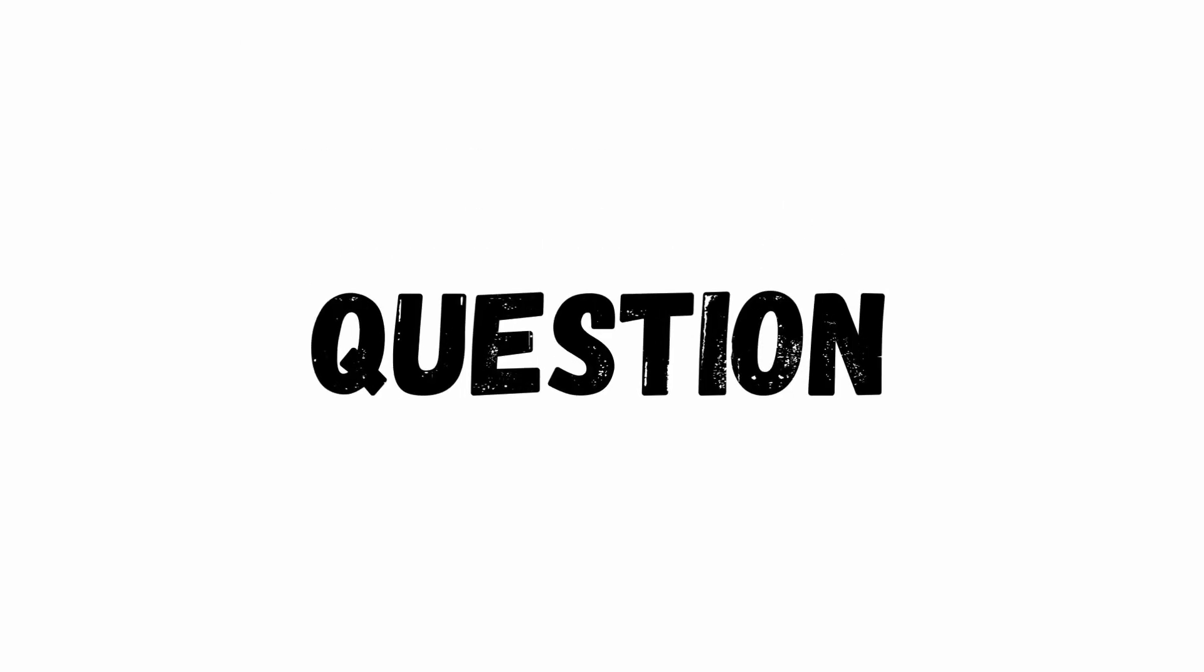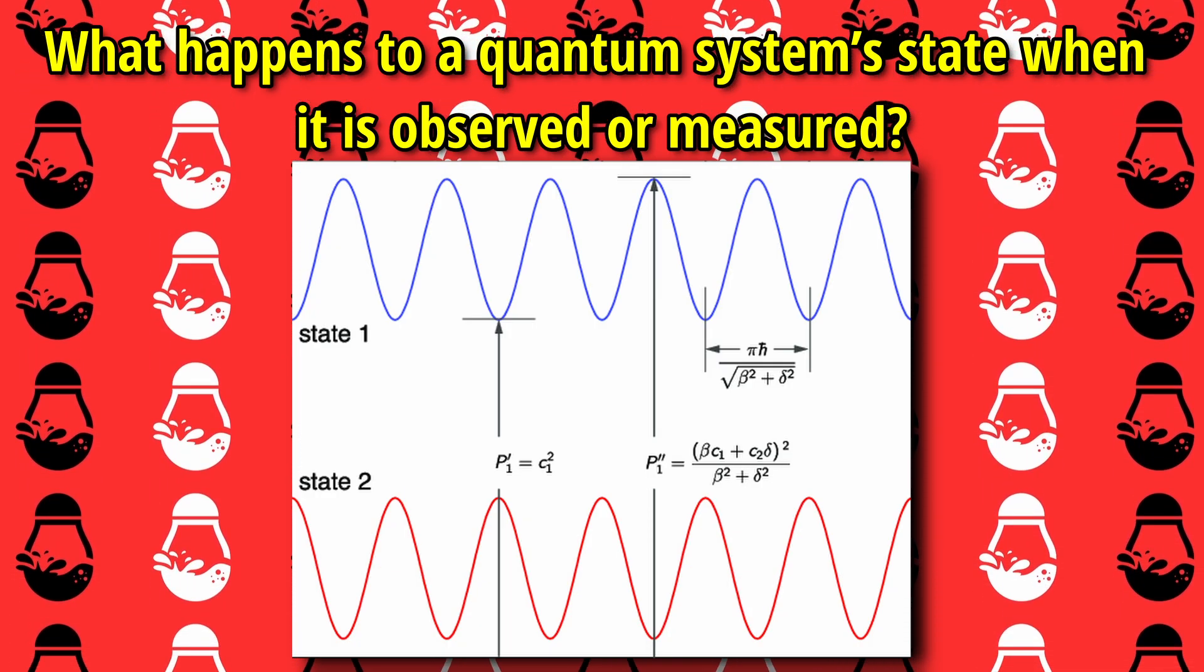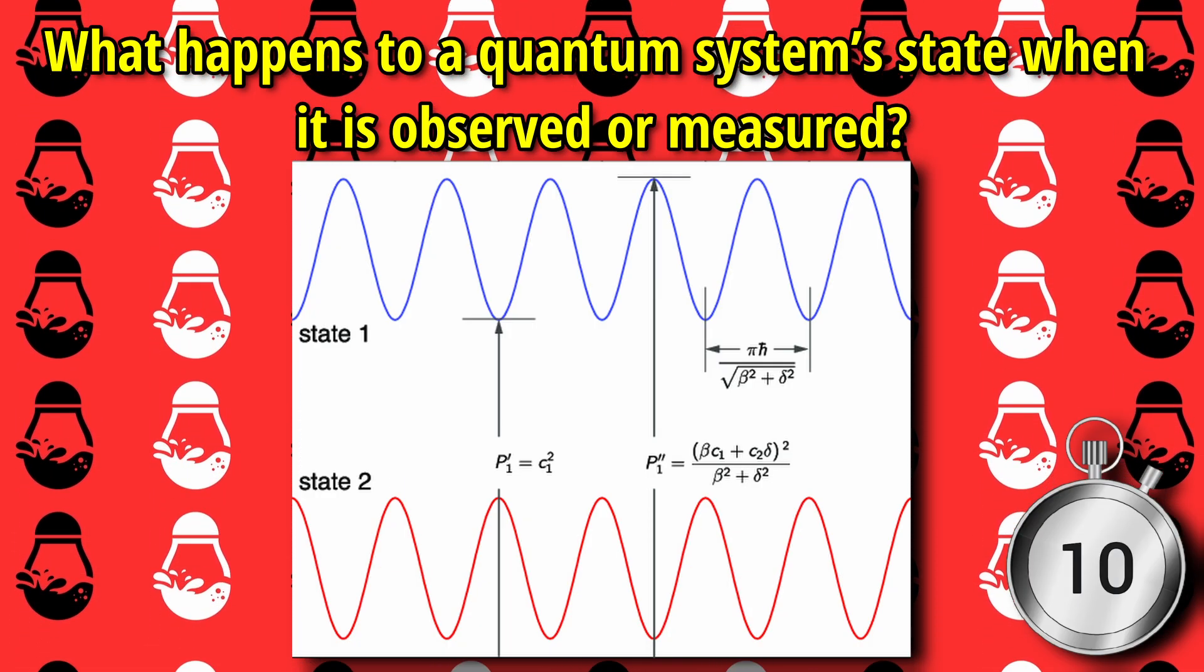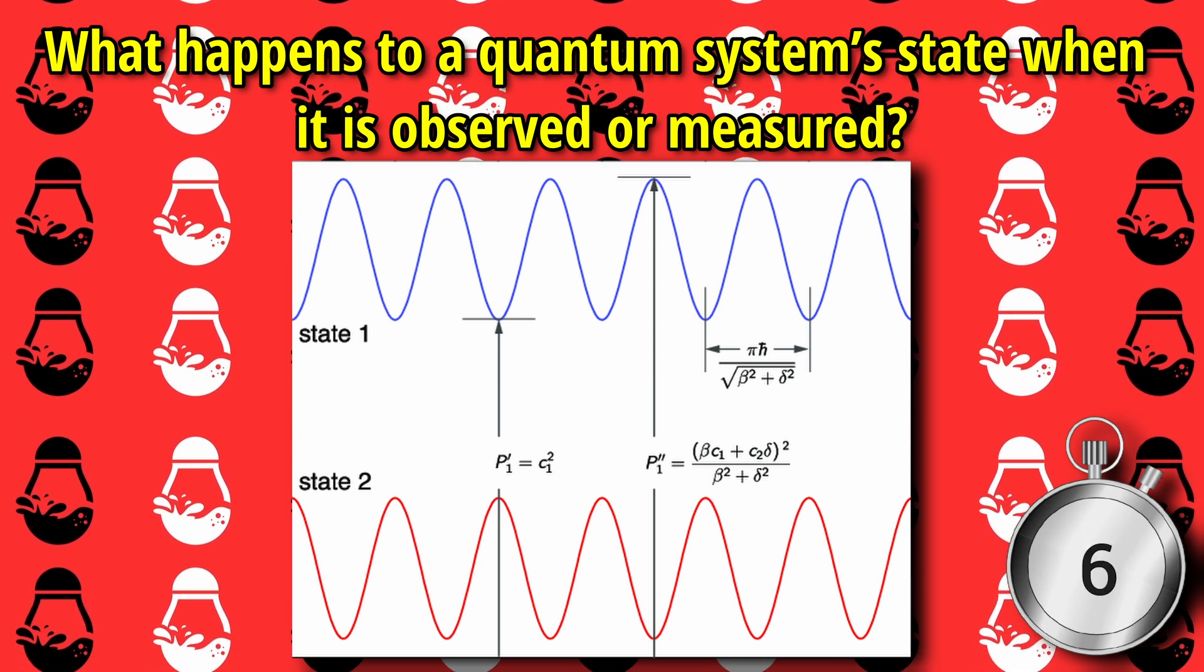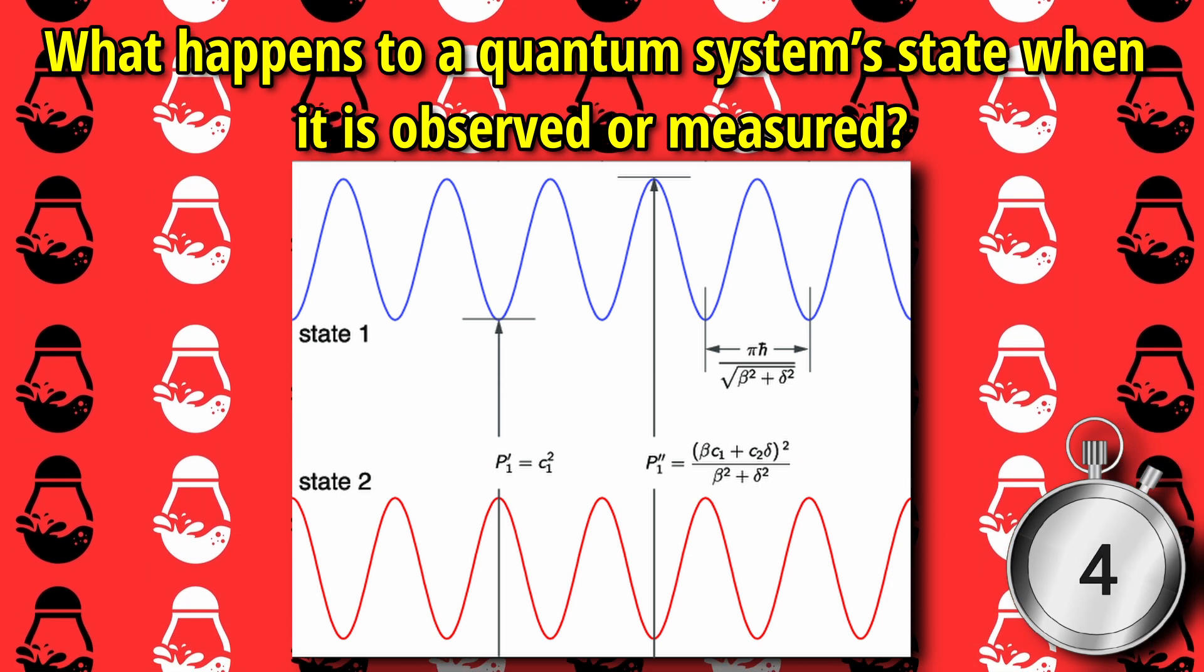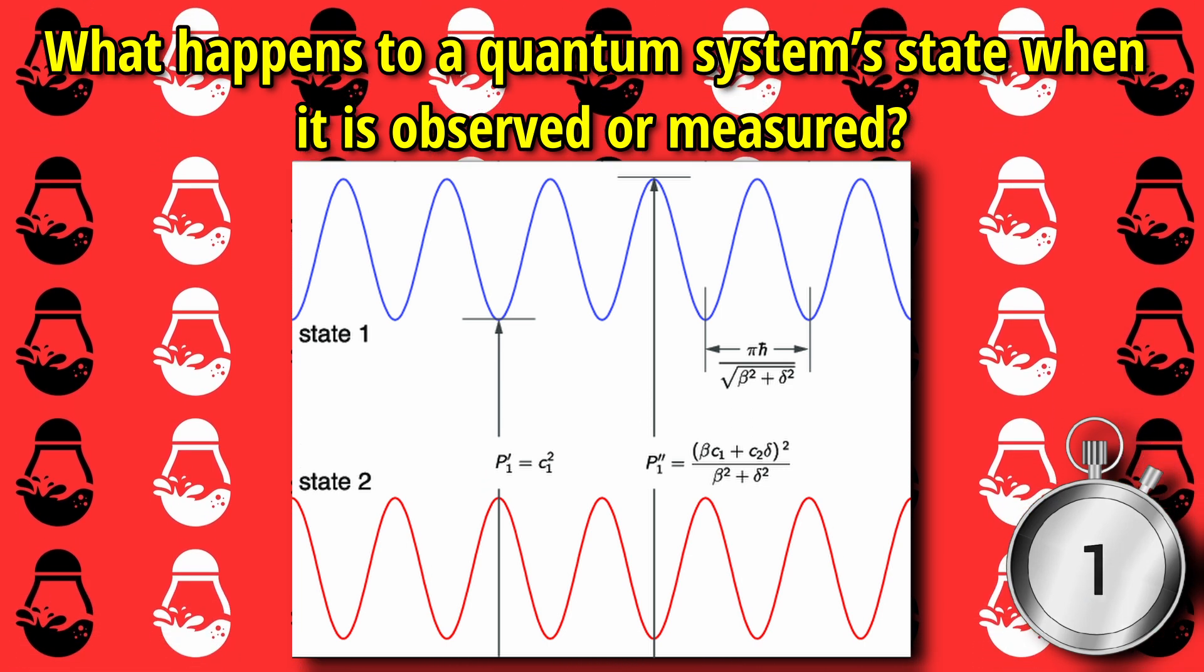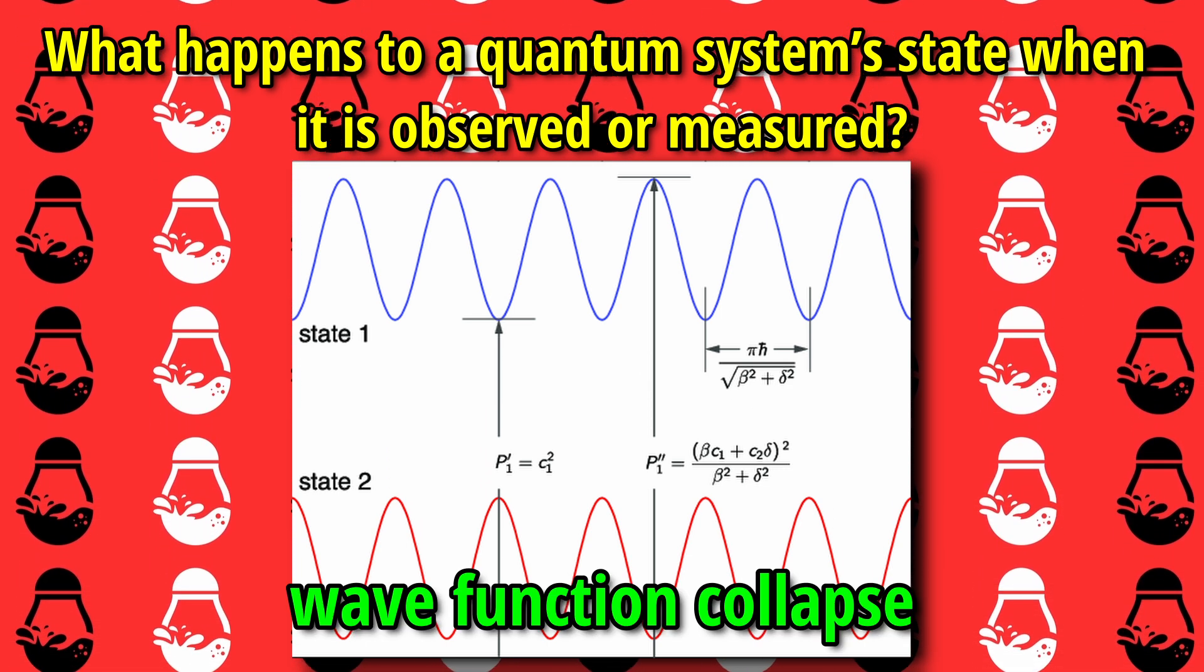Next question. What happens to a quantum system state when it is observed or measured? The answer is wave function collapse.